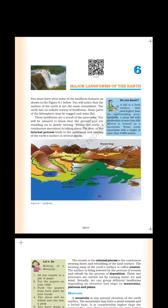You must have seen some of the landform features as shown in figure 6.1. You will notice that the surface of the earth is not the same everywhere — the earth has an infinite variety of landforms. Some parts of the lithosphere may be rugged and some flat. These landforms are the result of two processes. The ground you are standing on is slowly moving; within the earth a continuous movement is taking place. The first, or internal process, leads to the upliftment and sinking of the earth's surface at several places.